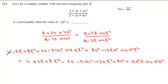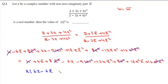Now the 4 cancels, 8z̄² cancels, 9|z|² cancels, 8z² cancels, and 16z²z̄² cancels. What we get is 2 times (6z - 6z̄) plus 12|z|²·z̄ minus 12|z|²·z equals 0.